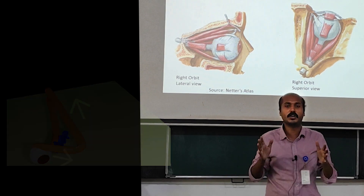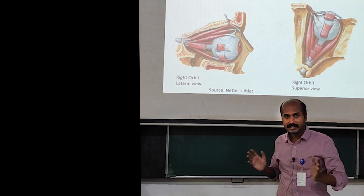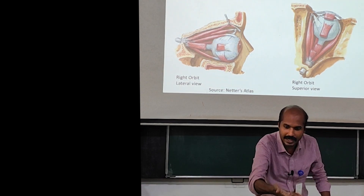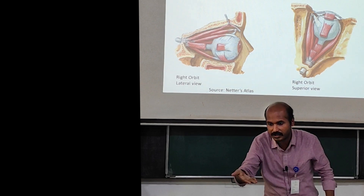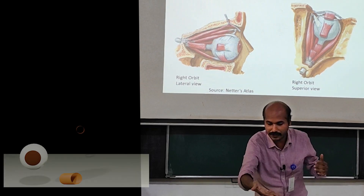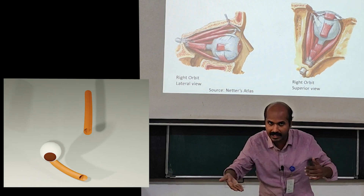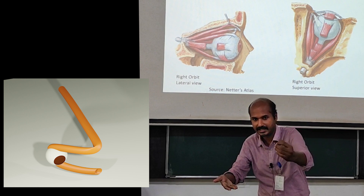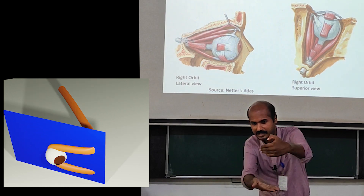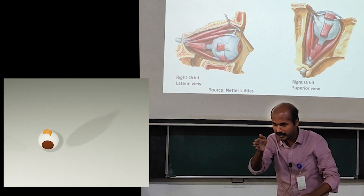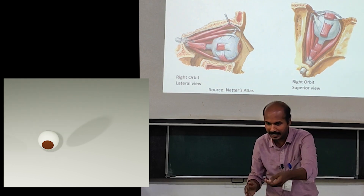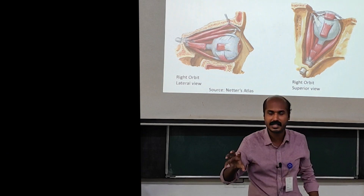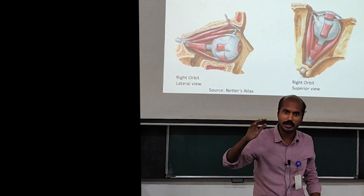The inferior oblique is unique because it does not arise from the apex. It arises from the floor of the orbit on the medial side and attaches to the eyeball posterolaterally. So the inferior oblique is almost parallel to the second segment of the superior oblique. In summary: the superior rectus and inferior rectus are roughly parallel; the medial rectus and lateral rectus are also parallel; and these are the six muscles attaching to the eyeball, with the levator palpebrae superioris going to the upper eyelid.